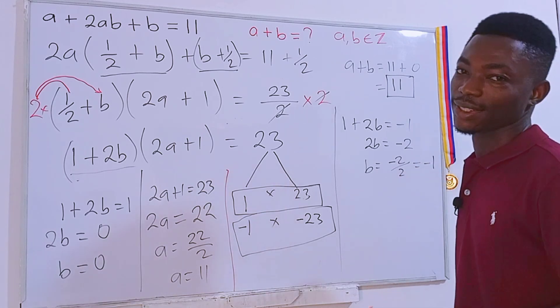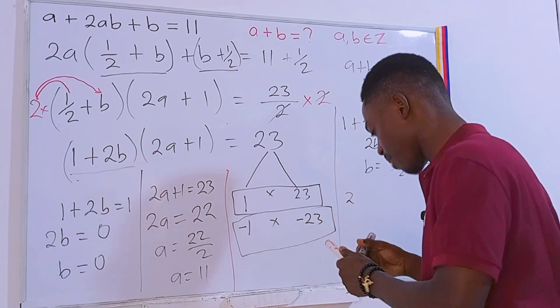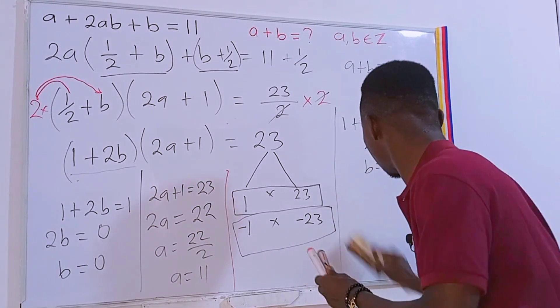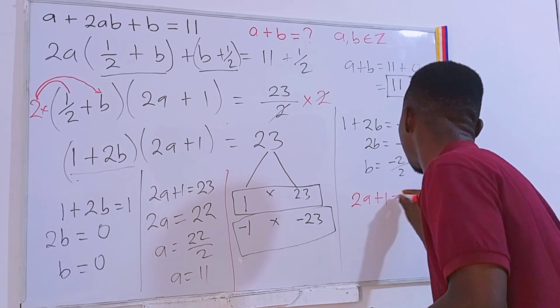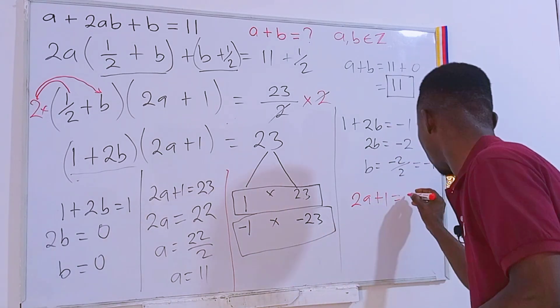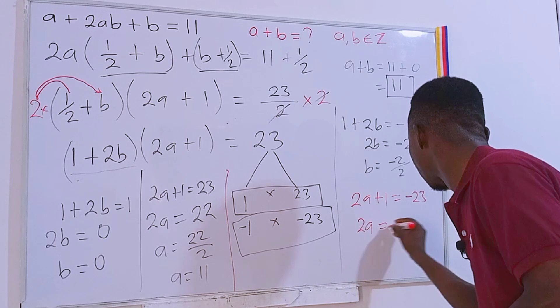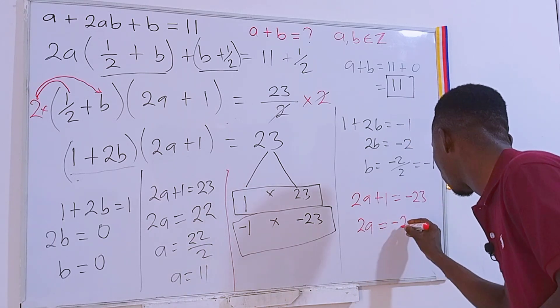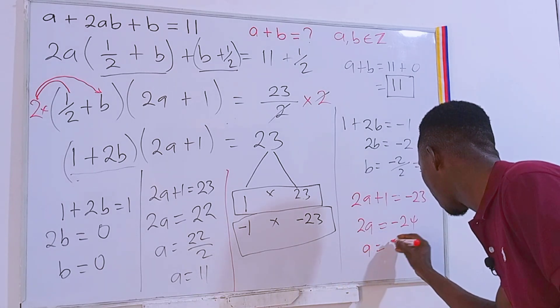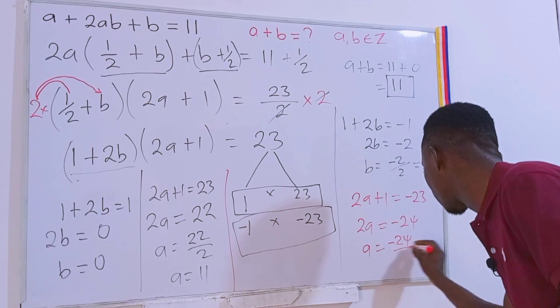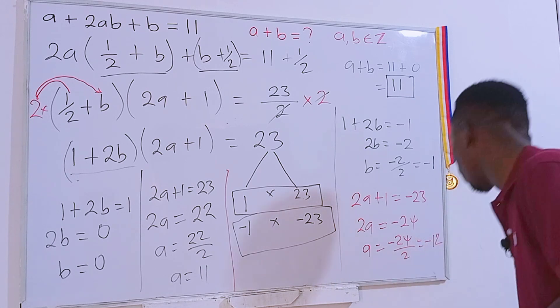In the same way, we have 2a + 1. Let me change the marker so that we can easily differentiate between them. 2a + 1 = -23. Therefore, 2a = -24, which implies that a = -24 divided by 2, which is equal to -12.